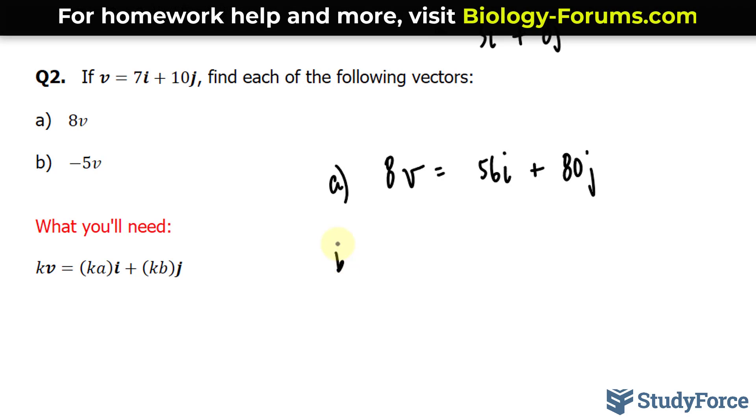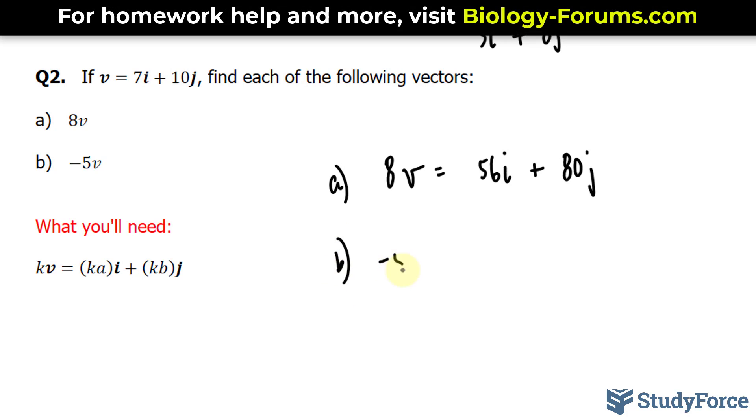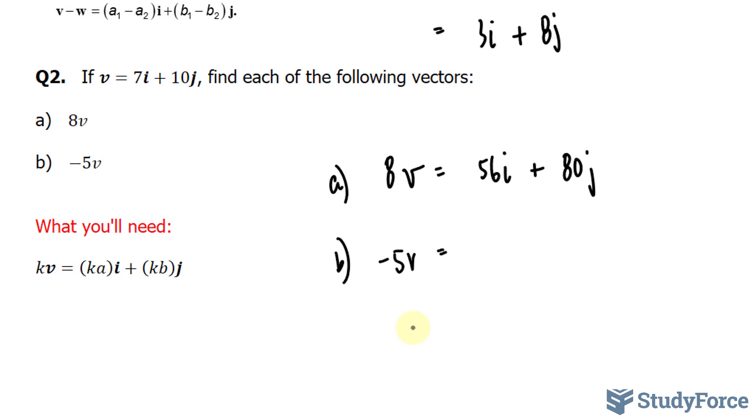That's a, and for b, we have to multiply the vector by negative 5. Negative 5 times 7 is negative 35i, plus negative 5 times 10, that's negative 50.